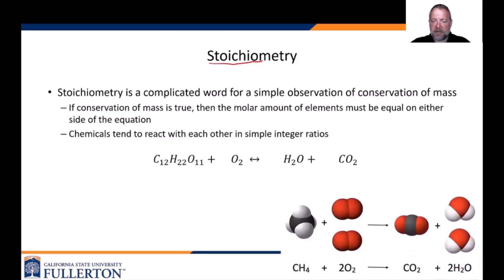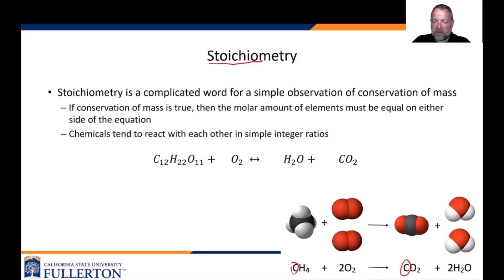For example, methane plus two oxygen goes to one CO2 plus two H2O. You can see there's one carbon on each side, four oxygens on each side, and four hydrogens on each side. It's a balanced equation — the number of atoms of each element are the same on either side of the arrow.